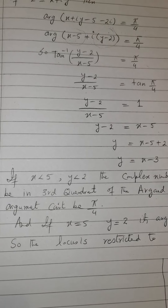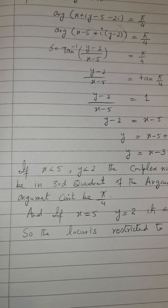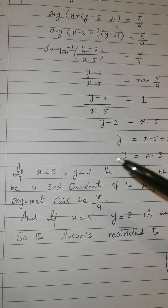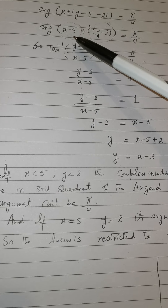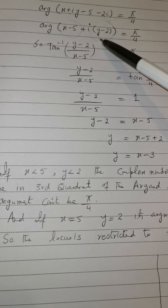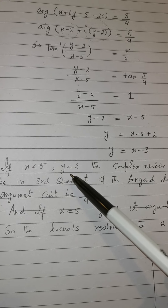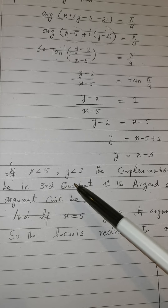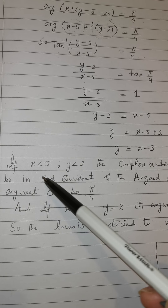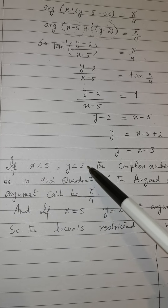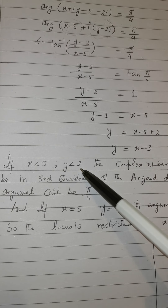Now we consider three conditions. First, suppose x < 5 and y < 2. If x < 5 and y < 2, then the point lies in the third quadrant of the Argand diagram, since both values are less than the reference point (5, 2).